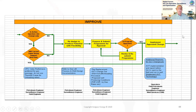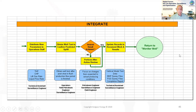In the improve stage, if only an injection change is needed, you make that change. Otherwise, you redesign, prepare and submit programs, get approval, and implement — each step with defined actions and people. Finally, you integrate: distribute new parameters, obtain a well test, confirm the predicted uplift, update the records, document everything, and return to monitoring the well.